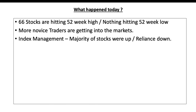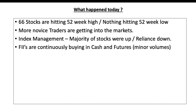Index management is happening today. Reliance was the main stock coming down; otherwise all other stocks were up. It is a balancing act by index management by the top guys. FIIs are buying in cash and futures, but in minor volumes — not major. Normally if they want to go for a big trend, FIIs buy or sell futures of almost 100,000-plus contracts. Now we are just holding around 13,000 contracts, so no great trend reversal is going to happen on the upside or downside. Just minor volumes.